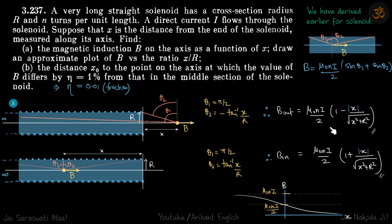B out is mu naught ni by 2, 1 minus x upon root x square plus r square. We have put a mod sign here because this term will always be negative. As you go away from the solenoid obviously the field should reduce. This negative sign makes sense.